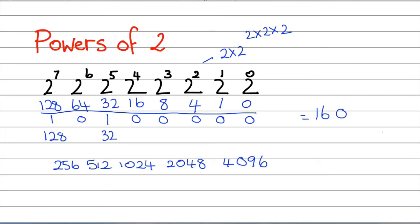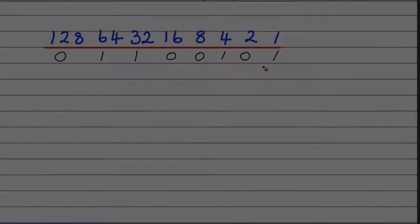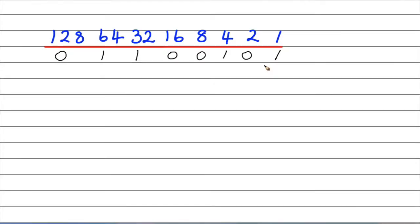Let's look at some more examples. Here's a binary number — how do you convert that to decimal? You look at the place values of each of the 1s. Wherever there's a 1, you note the place value down and then add them up. So you've got 96 plus 4 is 100, plus 1 is 101.